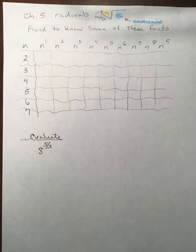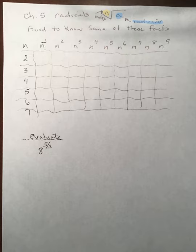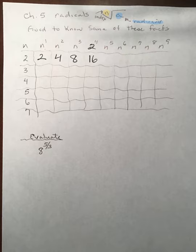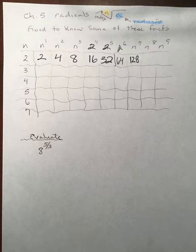So here we have two to the first power, two to the second power, two to the third power, and so on. Two to the first is 2, two squared is 4, two to the third is 8, two to the fourth is 16 — basically multiplying by two each time — so 32, 64, 128, 256, and so on and so forth. Just some of the basic numbers so that you can recognize them.